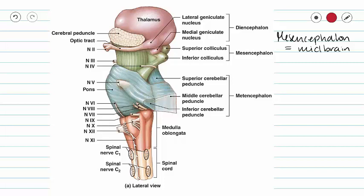This video continues our series on the brain stem and will cover the mesencephalon. Our mesencephalon is a short, mostly straight structure that connects the pons and the medulla to the diencephalon.